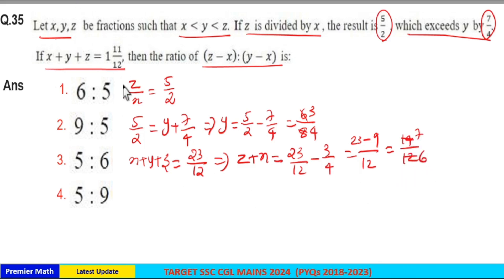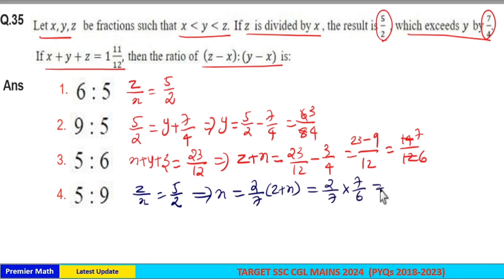So z + x = 7/6, and z/x is given as 5/2. From this, x is 2 parts out of total 7 parts. So 2/7 of z + x equals x, which means 2/7 of 7/6 = 1/3. Therefore x = 1/3.